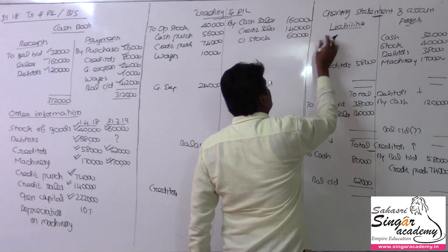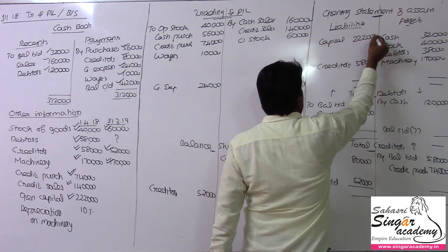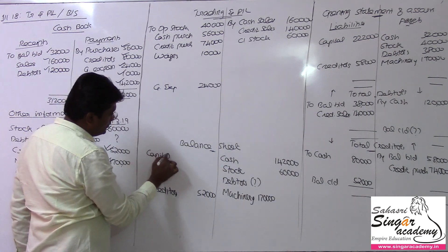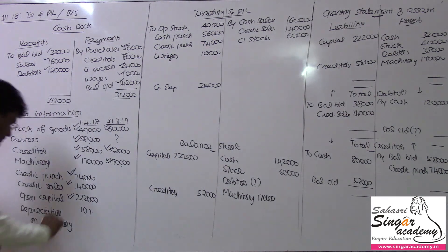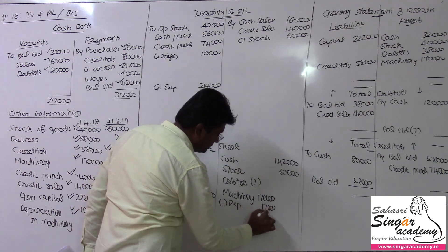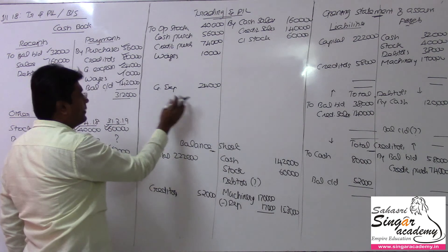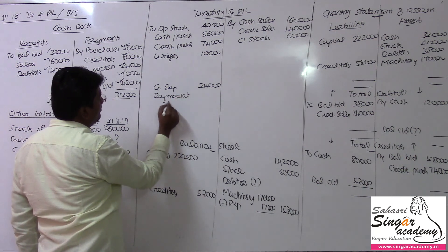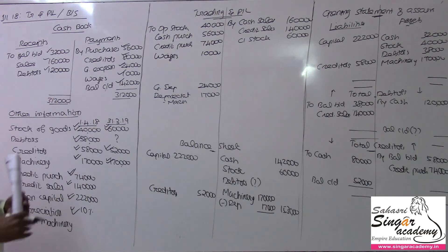Opening capital balance is 2,22,000 rupees — this is the capital at the beginning of the period. Depreciation on machinery: at 10%, depreciation is 17,000 rupees, leaving a closing machinery value of 1,53,000 rupees. Depreciation comes in the Profit and Loss Account — depreciation on machinery 17,000 rupees. Almost all adjustments have now been posted.